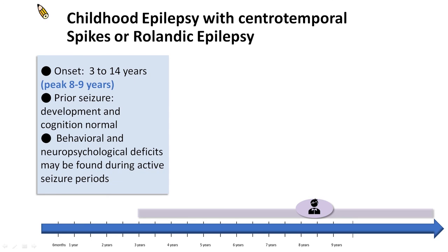The fourth and last example of childhood onset epilepsy is Childhood Epilepsy with Central Temporal Spikes, previously also known as Rolandic epilepsy. This syndrome is characterized by onset of seizures between 3 and 14 years, peaking at 8 to 9 years. Development and cognition prior to onset of seizures is normal. During the course of the active epilepsy, behavior and neuropsychological deficits may be found, particularly in language and executive functioning. These deficits improve when seizures remit.